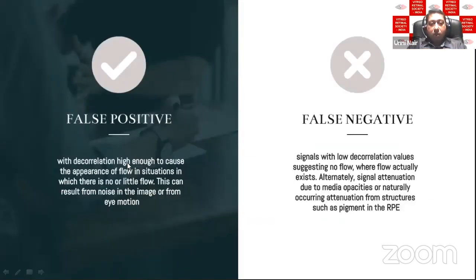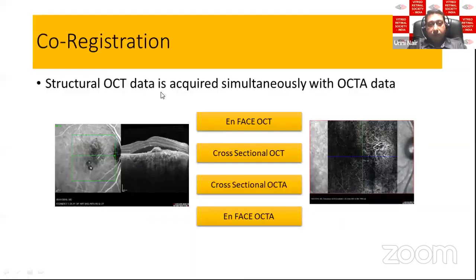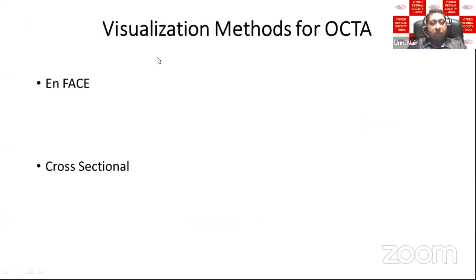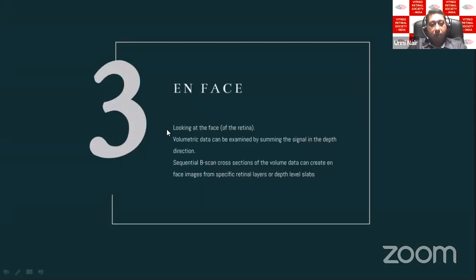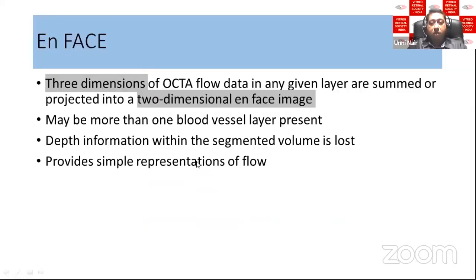Because of thresholding, you can sometimes get presence of flow where there is none — a false positive — or miss flow due to opacities or attenuation. An important feature is co-registration: with every OCTA scan you also get an en-face OCT and a cross-sectional OCT. En-face imaging looks at the top of the retina from above — it's the simplest form to understand flow, but it converts three-dimensional data into a two-dimensional image, losing depth information and superimposing bloodless layers.